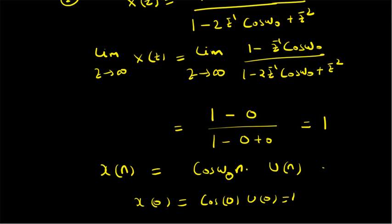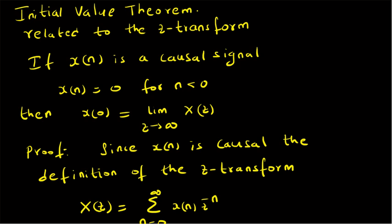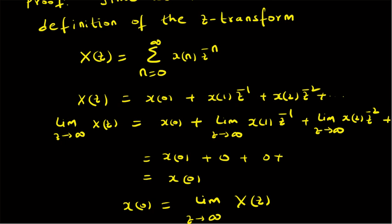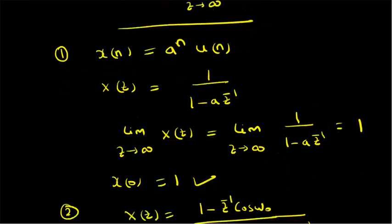Similarly, we can look at other signals and compute the initial value. To summarize, in this video we have learnt the initial value theorem: for a causal signal, where X of N is equal to 0 for N less than 0, the initial value of the signal, that is X of 0, is given by limit Z tends to infinity of X of Z — it is the value of the Z-transform as Z goes to infinity. This theorem can be easily proved from the definition of the Z-transform by evaluating all terms as the limit Z tends to infinity. Only the first term, X of 0, survives and all other terms become 0. We also looked at examples that utilize this initial value theorem to compute the values of the signals at N equal to 0. Thanks for watching.